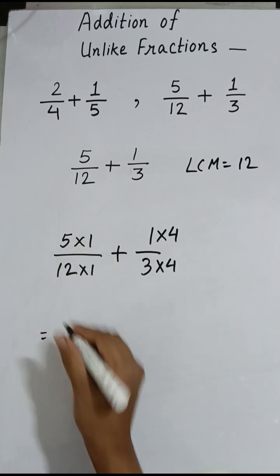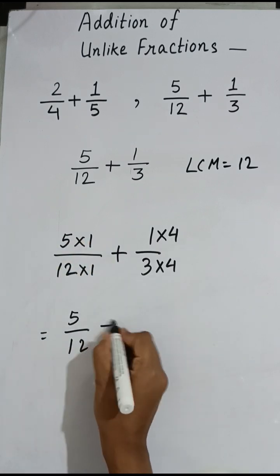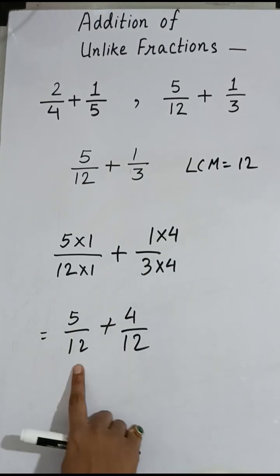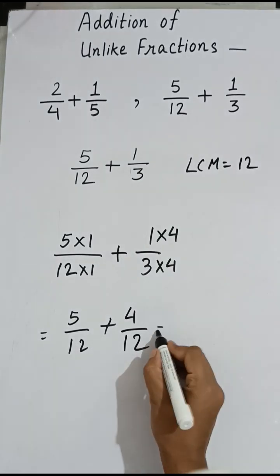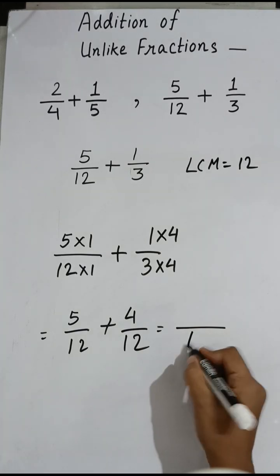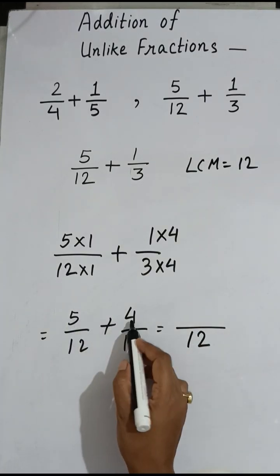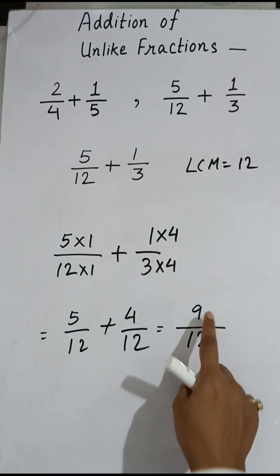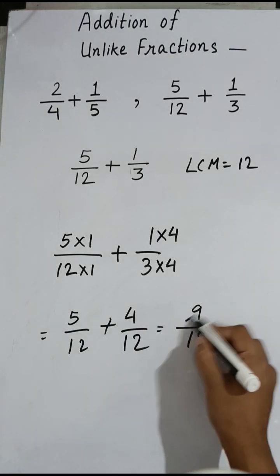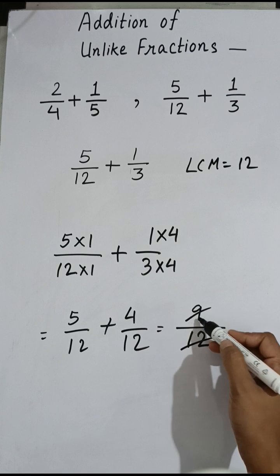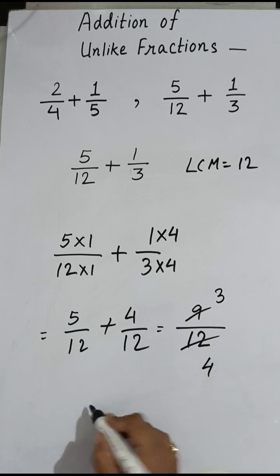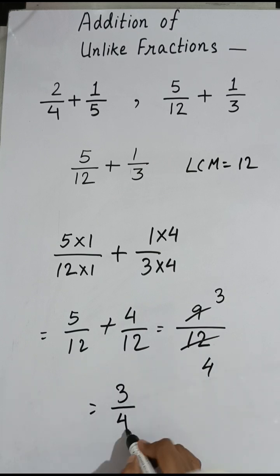5 × 1 = 5, denominator is 12. These two fractions have become like fractions. Now we simply add the numerators: 5 + 4 = 9, over 12. We got 9/12. We can simplify this further: divide both by 3 — 9 divided by 3 is 3, and 12 divided by 3 is 4. So the final answer is 3/4.